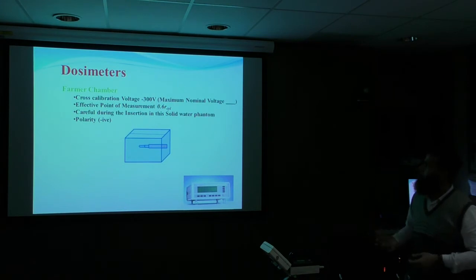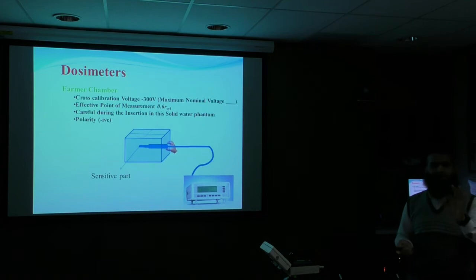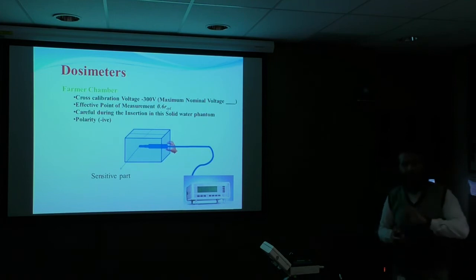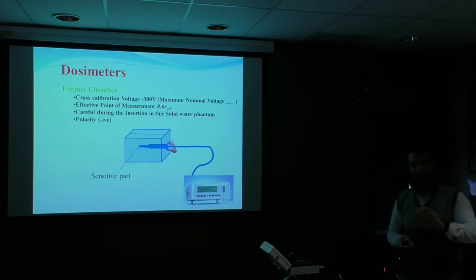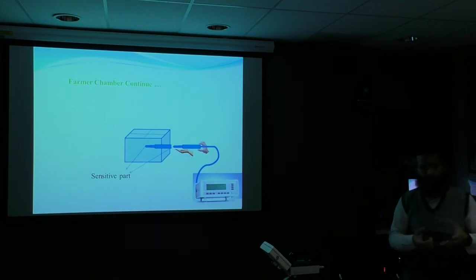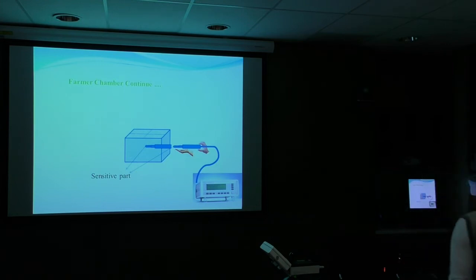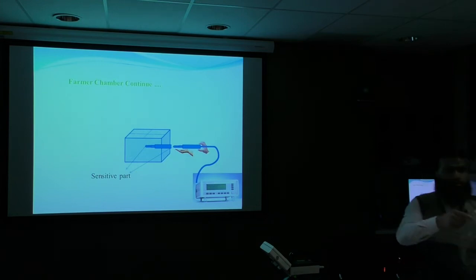For the farmer chamber, cross calibration - if you set minus 300 and see what happens. This is one of the most sensitive parts of the chamber. When you do measurements in water, you don't put a cover on it. There's nobody who comes with the cover. So this is the cover on it.